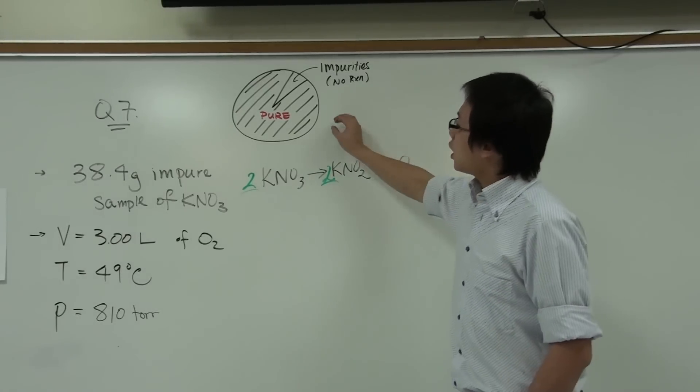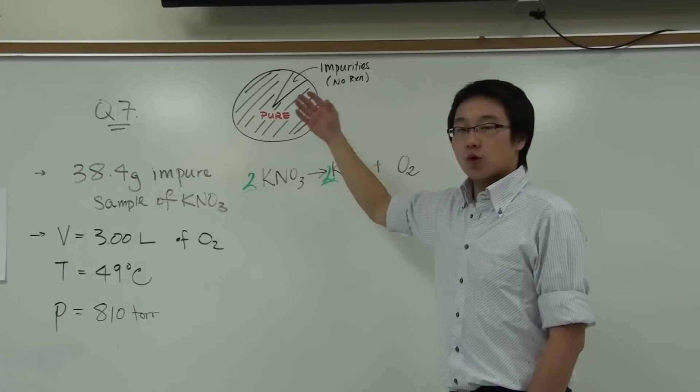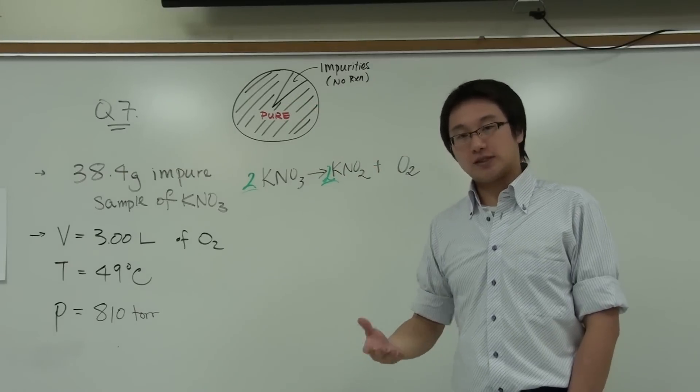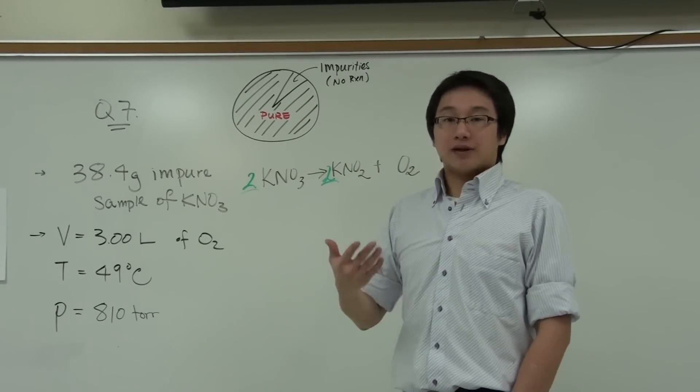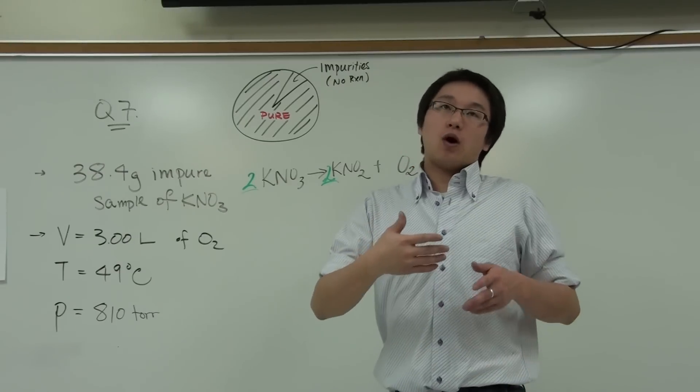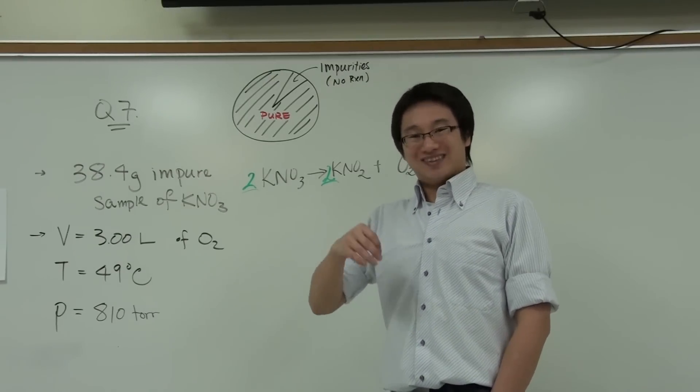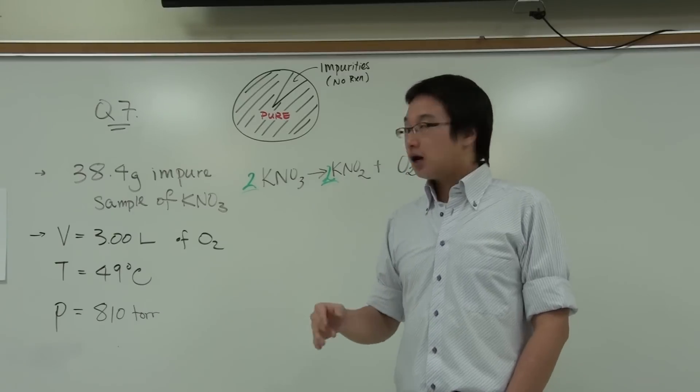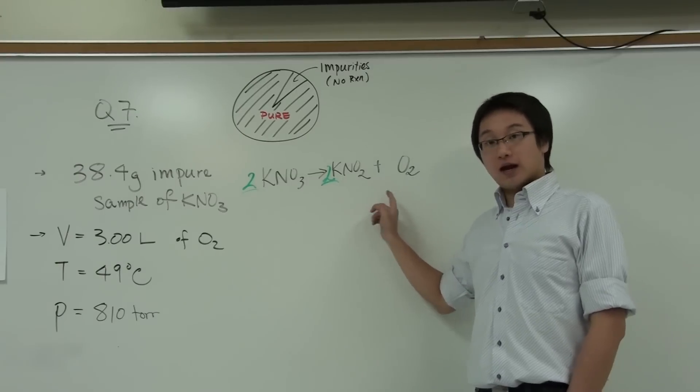Now we have a balanced equation, but the most important thing is you really understand this concept that we have pure potassium nitrate in the sample. The pure potassium nitrate will decompose and it will produce potassium nitrite and oxygen gas.